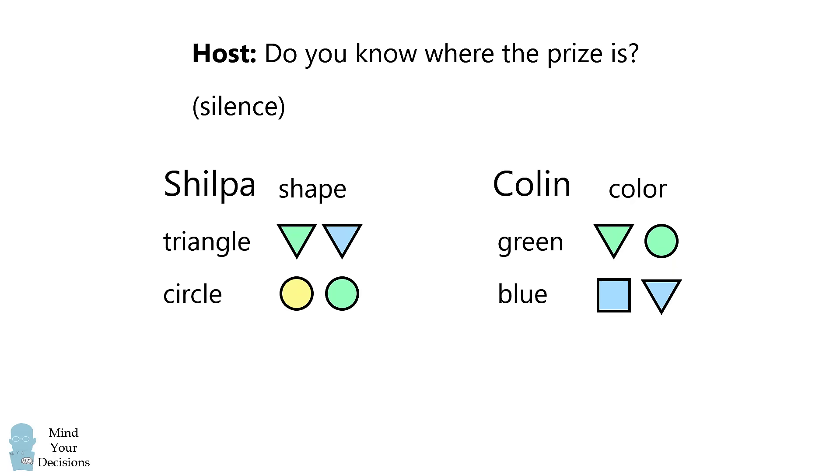Now Shilpa has perfect logical reasoning. So she knows that since Colin was silent, he was not told yellow initially. So Shilpa can eliminate the yellow circle as one of her options. Similarly, Colin knows that Shilpa was not told square initially, so he can then eliminate the blue square from his options.